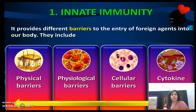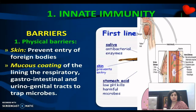Innate immunity provides different barriers to the entry of foreign agents into the body। यह चार तरह के barriers होते हैं: physical barriers, physiological barriers, cellular barriers, और cytokine barriers। Physical barriers में skin आती है जो foreign bodies की entry को prevent करती है, और mucous coating of the lining of the respiratory, gastrointestinal, and urogenital tracts जो microbes को trap करती है।